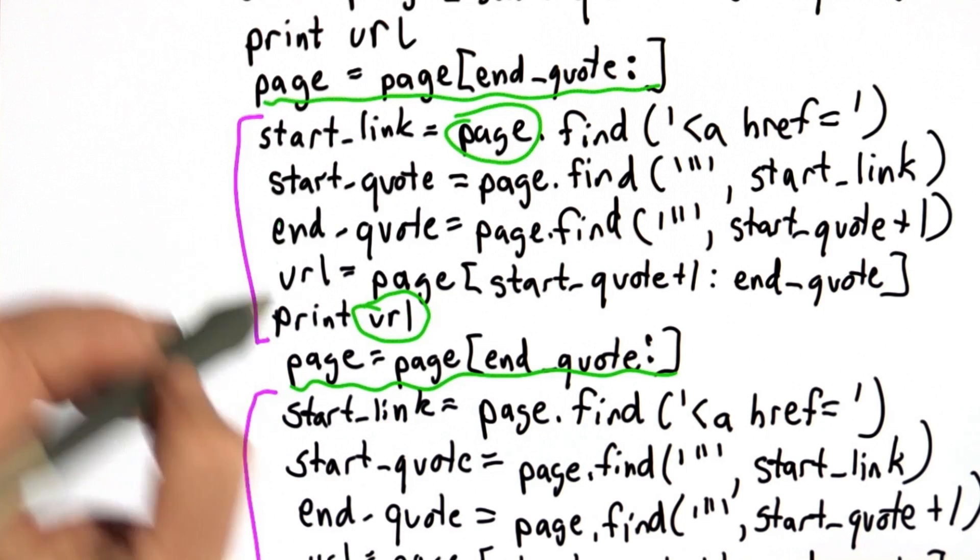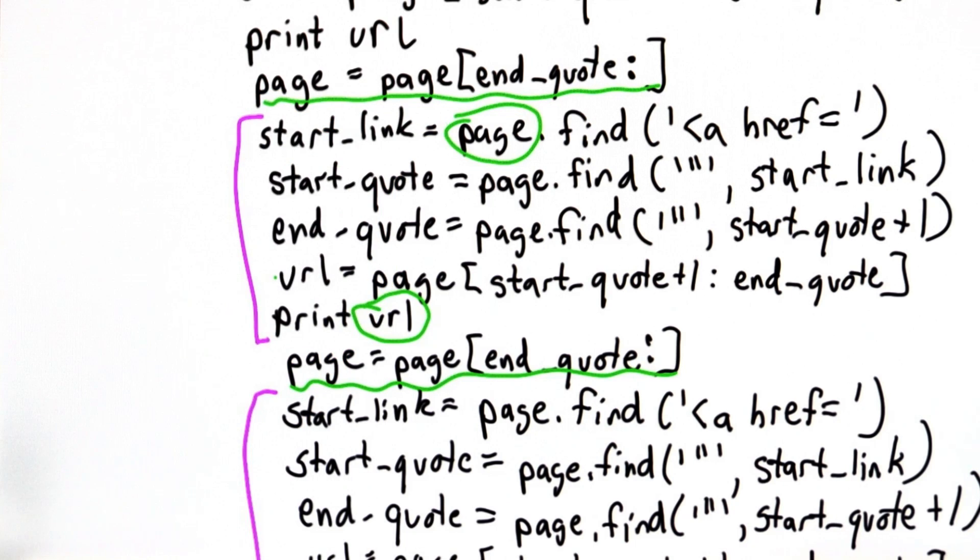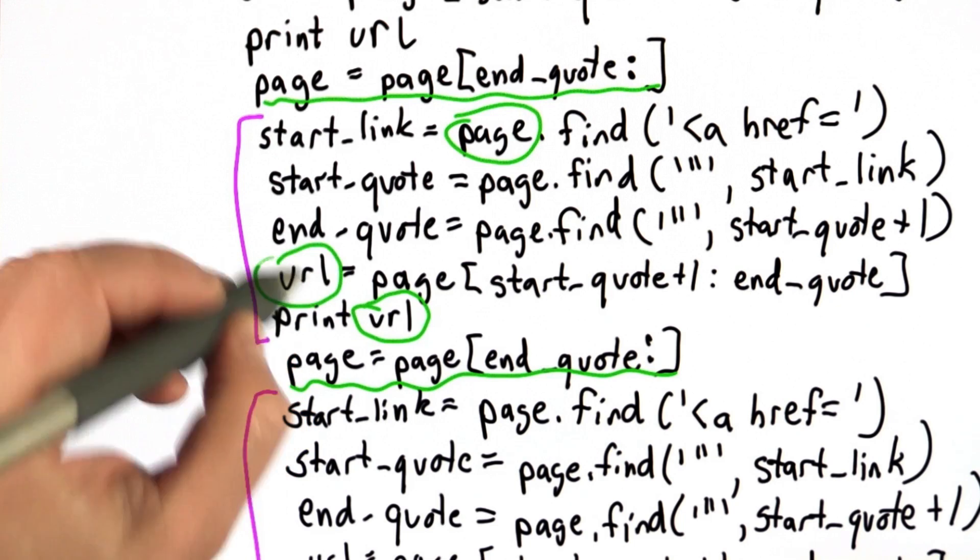So that's our goal is to turn this into a procedure where page is the input, we can do the same code over and over again, and every time we do it, we want to get this URL value as the output.